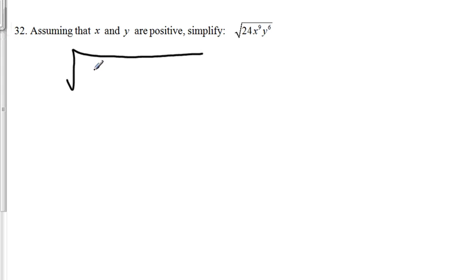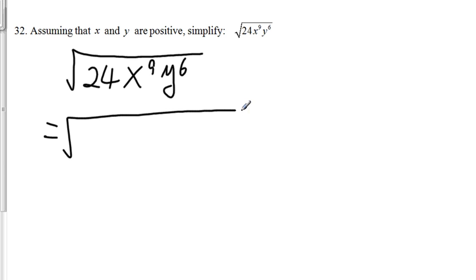We are going to solve square root of 24x to the 9th y to the 6th power. First of all, we are going to find the largest perfect square number that can divide into 24 evenly, which is 4. So 4 times 6 gives us 24.